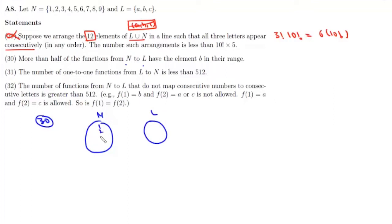So this is 1, 2, 3, up to 9 and here we have A, B and C. Now we have to find the number of functions from N to L having the element B in their range.